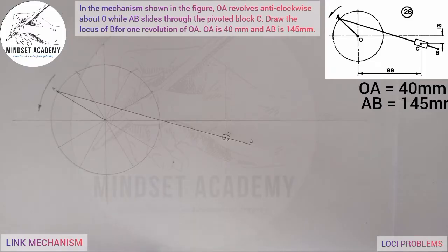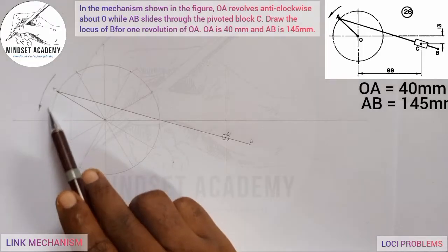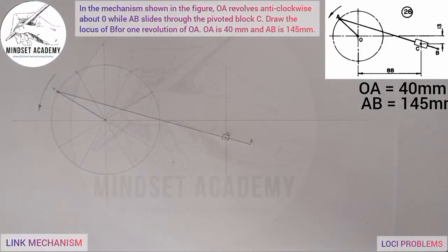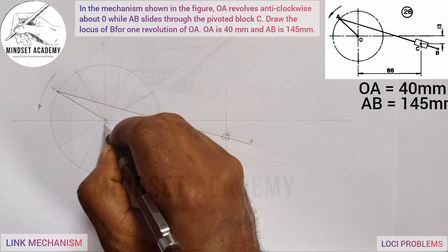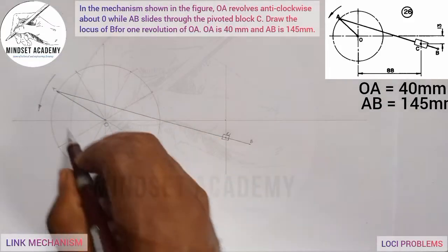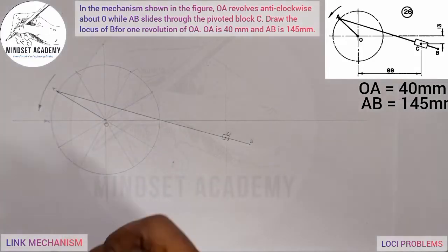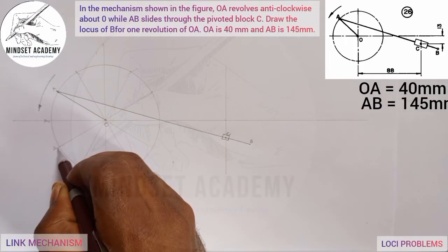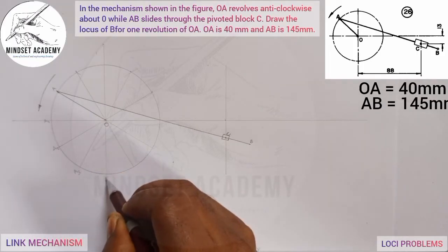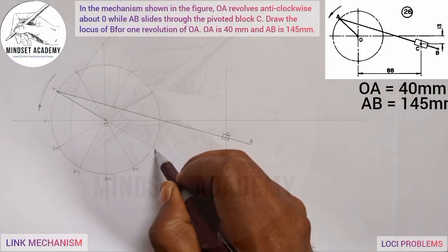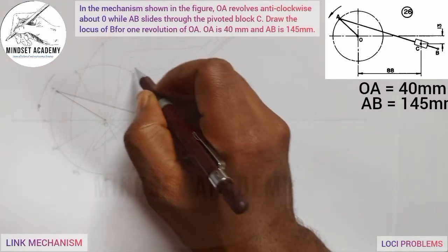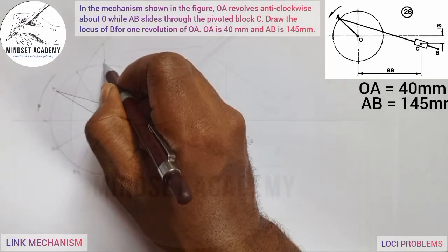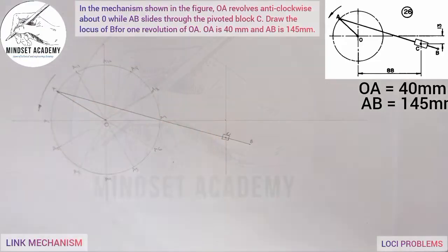We are going to repeat the same process at every point, because it is a one complete revolution — from A back to A. Since it is going anti-clockwise, this center is O, and OA is the crank. The points around the crank will be A1, A2, A3, A4, A5, A6, A7, A8, A9, A10, A11, and A12.